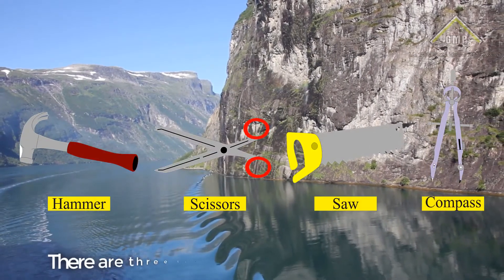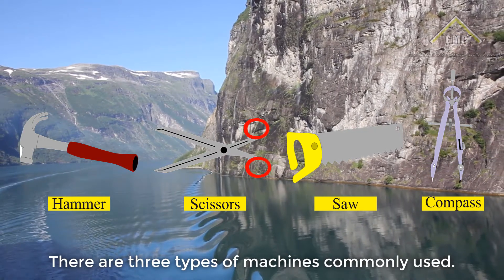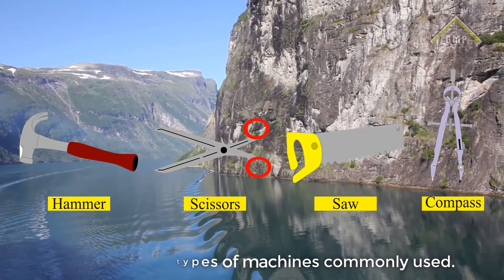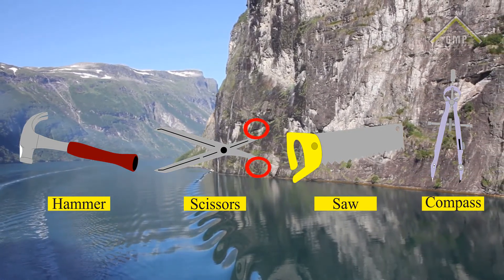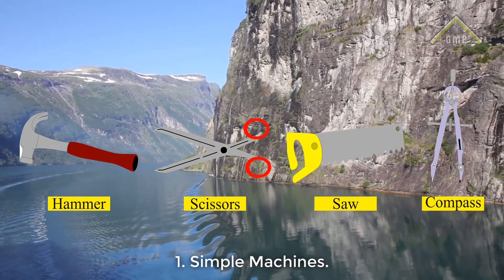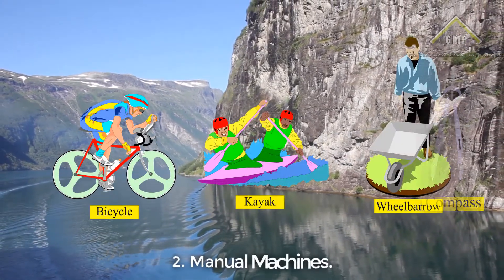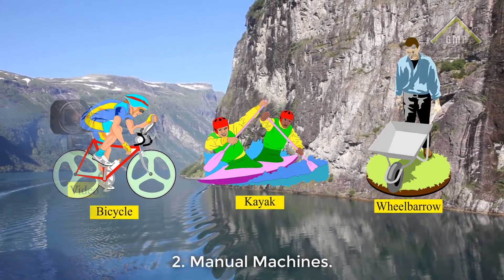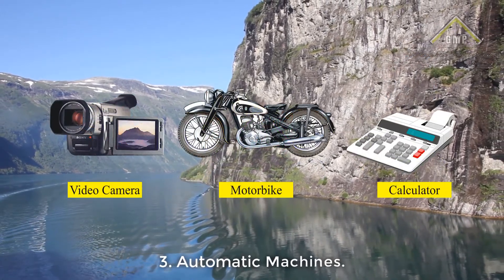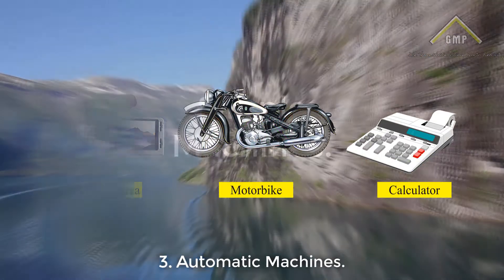Types of Machines. There are three types of machines commonly used: 1. Simple Machines, 2. Manual Machines, 3. Automatic Machines.